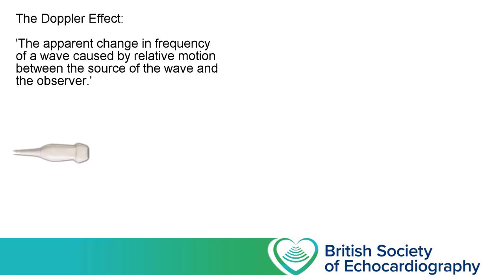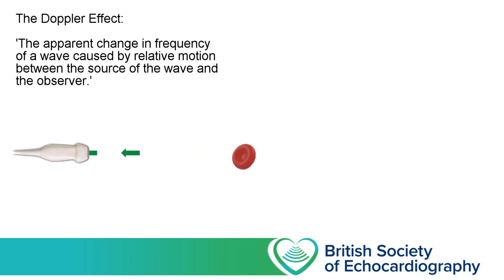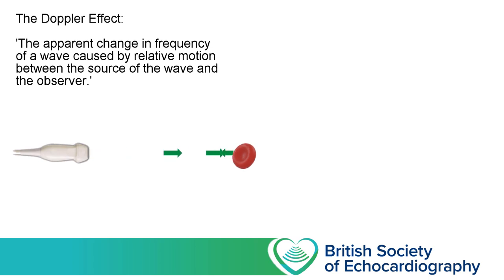Here the observer is our transducer, and the source of our wave is our reflective surface — in this example, a red blood cell. Now if there's no relative motion between these two, if they're at a fixed distance apart, then the wave that leaves the transducer and strikes the red blood cell will be reflected back towards the transducer with an identical frequency. We can imagine that each of the green arrows represents the peak of one wave, spread evenly apart, and they return spread equally evenly apart when they come back to the probe.